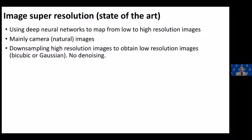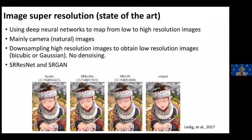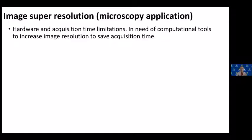With mathematical downsampling such as bicubic or Gaussian, the result may not be true to real low-resolution images and no realistic noise is added, so there is no denoising component with the model. The most popular models are SR-ResNet and SRGAN. Thinking about applying similar models to bioimaging, for bio images we have hardware and acquisition time limitations that restrict image resolution, so we need computational tools to boost image resolution.